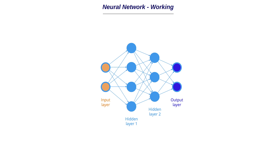To understand loss functions, optimizers, and propagation steps, it's really important to clearly understand how a neural network works. Let's consider a simple example: we want to build a neural network capable of classifying an image as cat or not a cat — a binary classification neural network. You can think of this neural network as a team of experts learning to classify images, where the individual team members are the neurons in each layer.